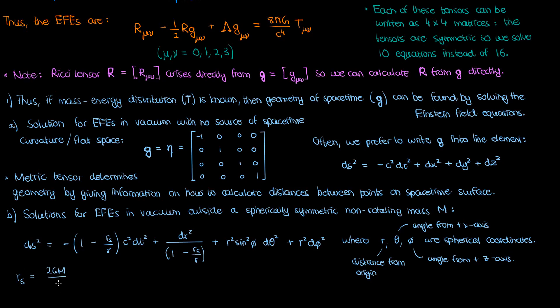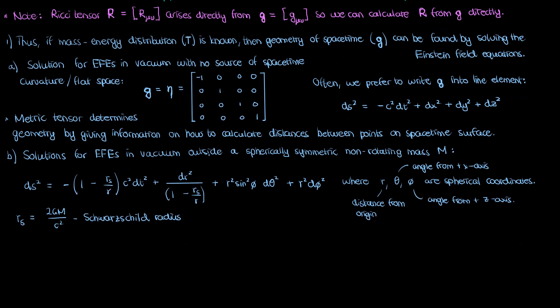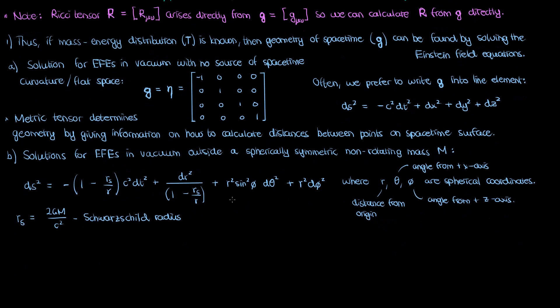Meanwhile, r sub s is a special quantity known as the Schwarzschild radius, given by 2GM over c squared. If your spherical mass is smaller than this radius, then interesting things start to happen, but we'll discuss those in a future video. This whole solution, by the way, is known as the exterior Schwarzschild solution.